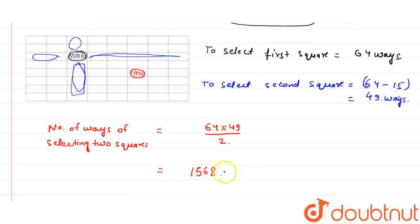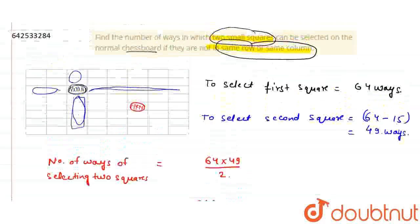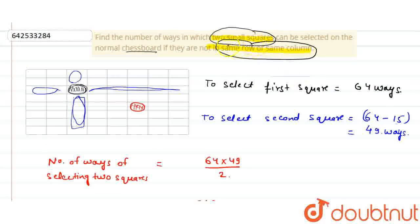It's 1568 ways in which I can select two small squares from a normal chessboard and they are not in the same row nor in the same column. Thank you.